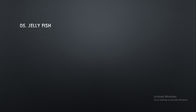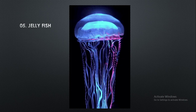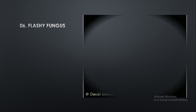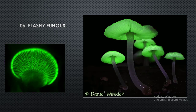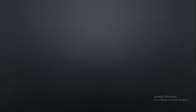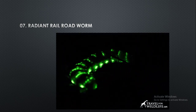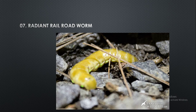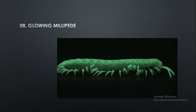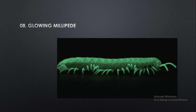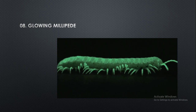The fifth one is jellyfish, the sixth one is fleshy fungus, the seventh one is the radiant railroad worm, and the eighth one is the glowing millipede. Those are the objects which emit light — in other terms, we can call them luminous objects.